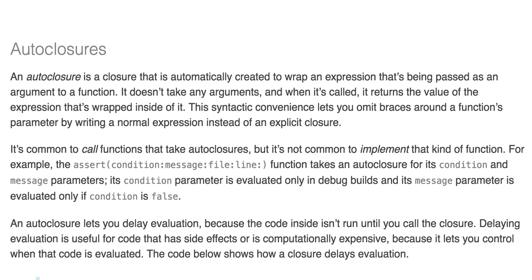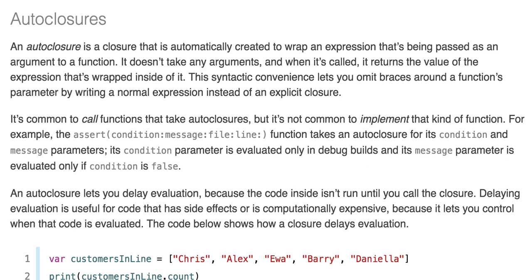Auto closures: An auto closure is a closure that is automatically created to wrap an expression that's being passed as an argument to a function. It doesn't take any arguments, and when it's called, it returns a value of the expression wrapped inside it. This syntactic convenience lets you omit braces around a function's parameter by writing a normal expression instead of an explicit closure. It's common to call functions that take auto closures, but not common to implement that kind of function. For example, the assert(condition:message:file:line:) function takes an auto closure for its condition and message parameters. The condition parameter is evaluated only in debug builds, and the message parameter is evaluated only if the condition is false.